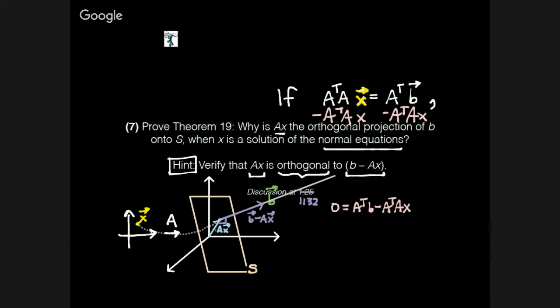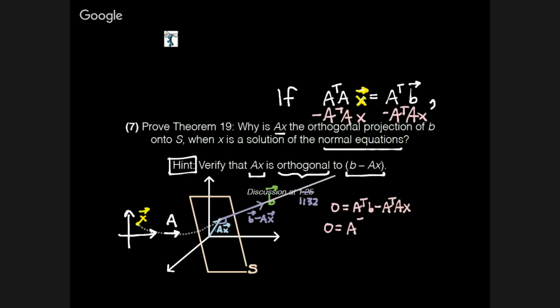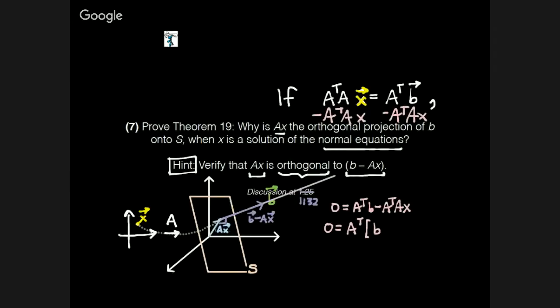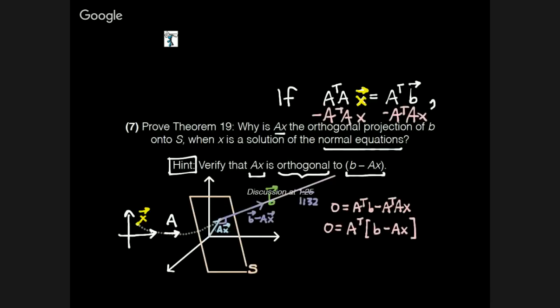Great. And then she says, factor out, which we can do with matrix multiplication, factor out the A transpose from this equation. We end up with A transpose times B minus Ax. Okay, great.